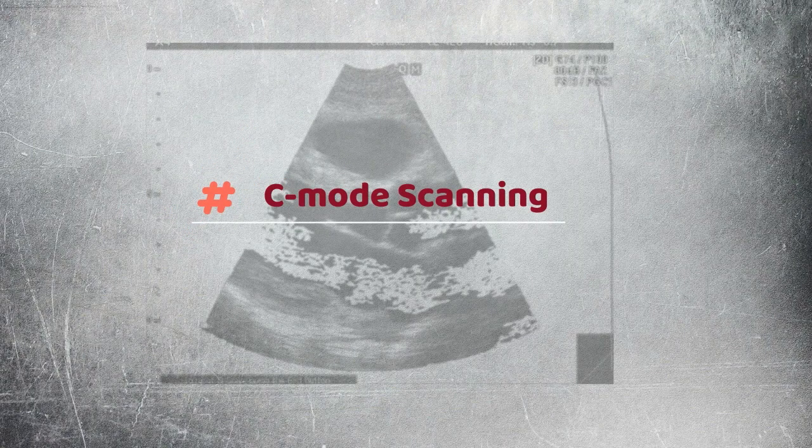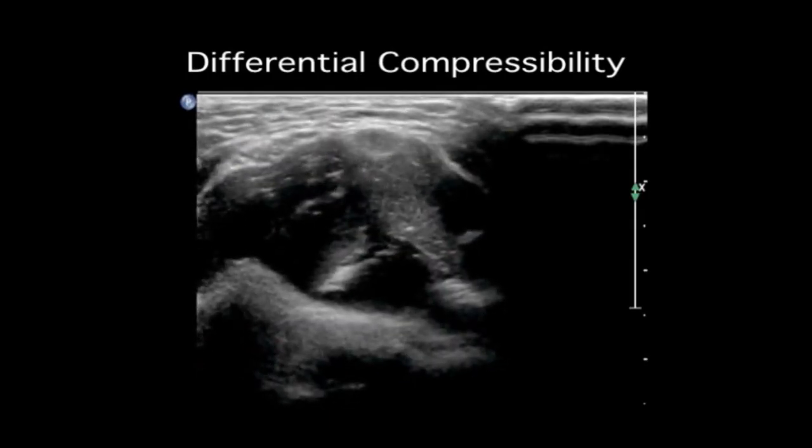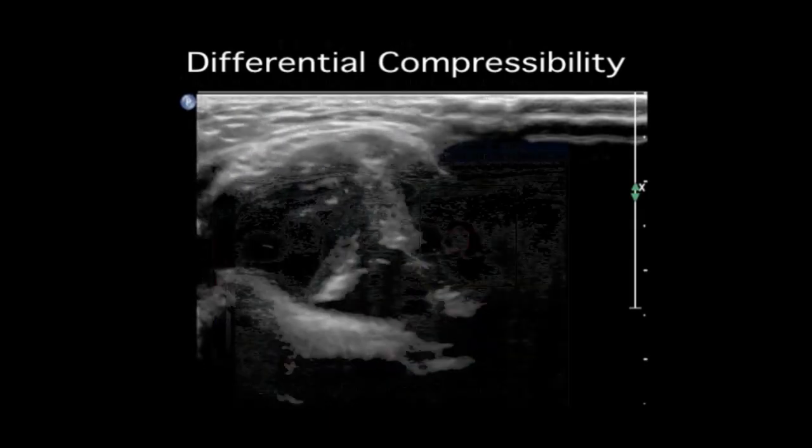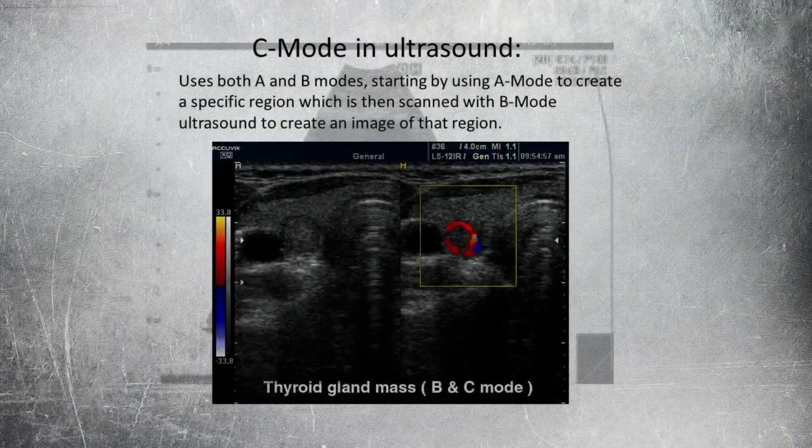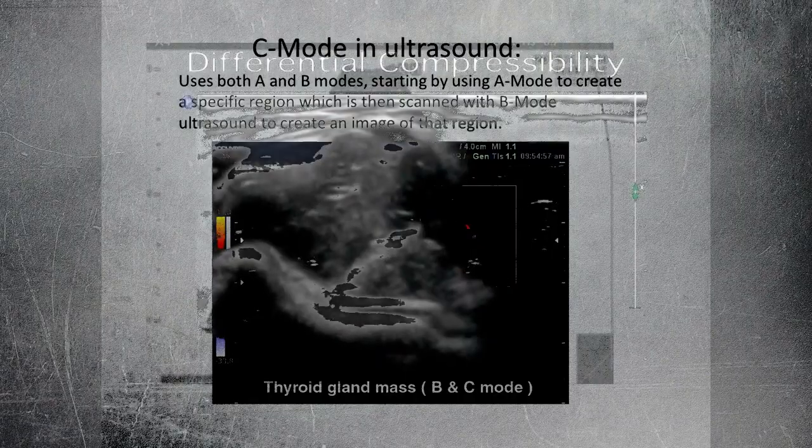C-mode. A C-mode image is formed in a plane normal to a B-mode image. A gate that selects data from a specific depth from an A-mode line is used. Then, the transducer is moved in the 2D plane to sample the entire region at this fixed depth.